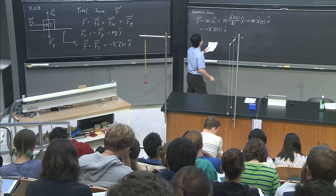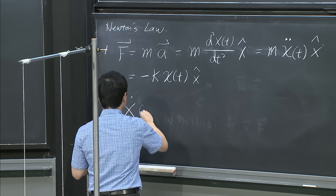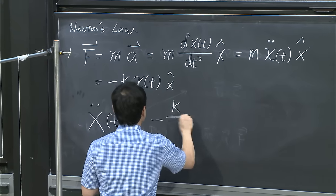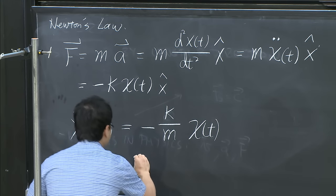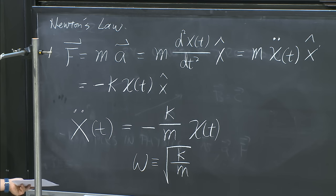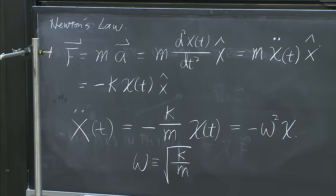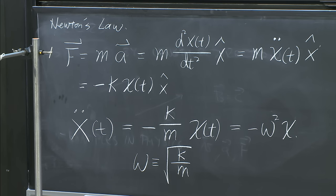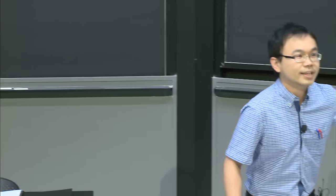We've solved the problem as a physicist. Now the question is: what is the solution to this second-order differential equation? As I mentioned, that's the content of 18.03, not 8.03. How many of you have taken 18.03? Good — everybody knows the solution. The solution is x(t) equals A cosine(ωt) plus B sine(ωt). My friends from the math department tell me this is the solution, and I trust them.